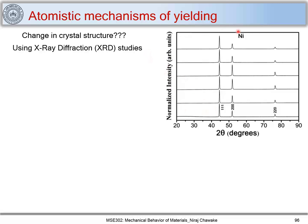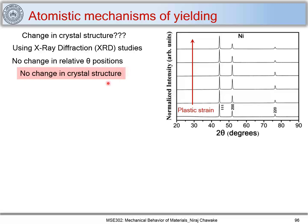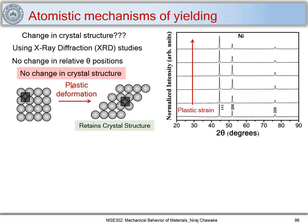Using careful X-ray diffraction studies, people have figured out what exactly occurs during plastic deformation. As shown for nickel, you can see that the peak positions with respect to increasing plastic strain remain the same — the relative theta positions of the peaks are not changing. Applying Bragg's law, this clearly indicates that there is no change in crystal structure during plastic deformation.